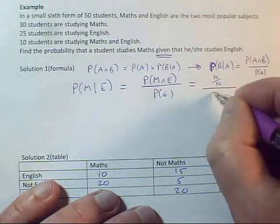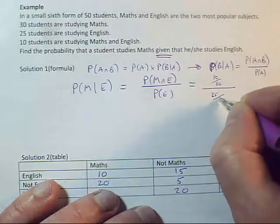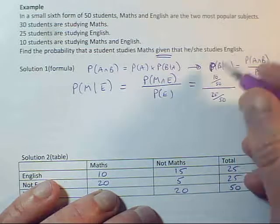Which is this 25 50ths. And if I do this, the 50ths actually cancel.